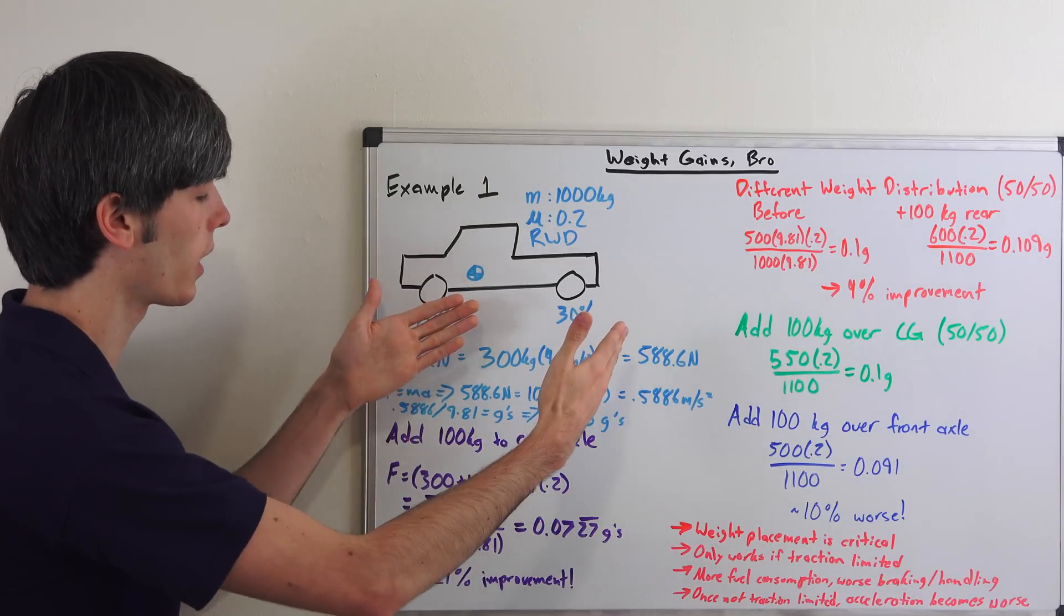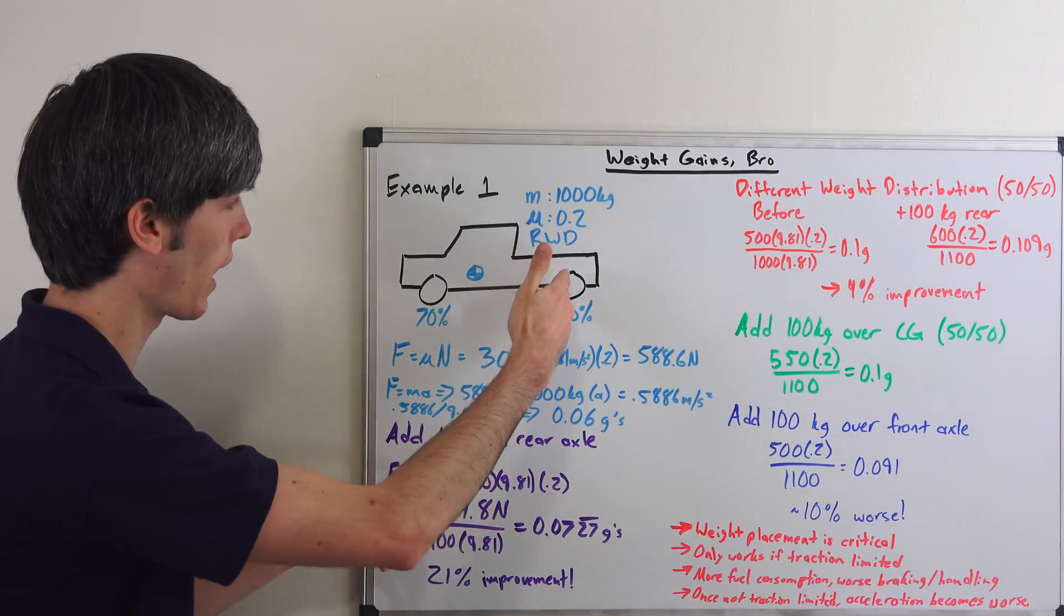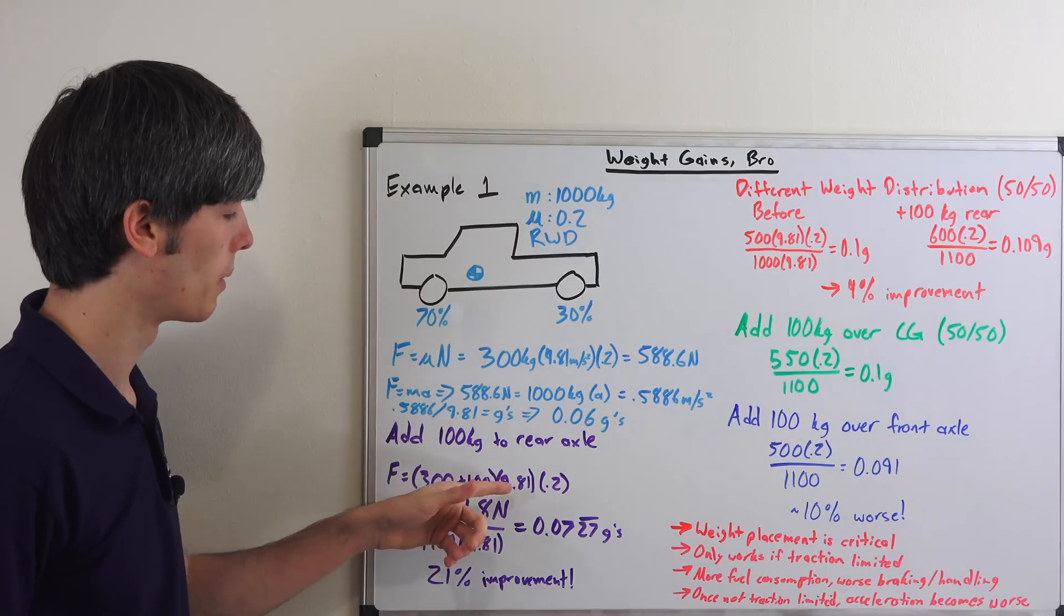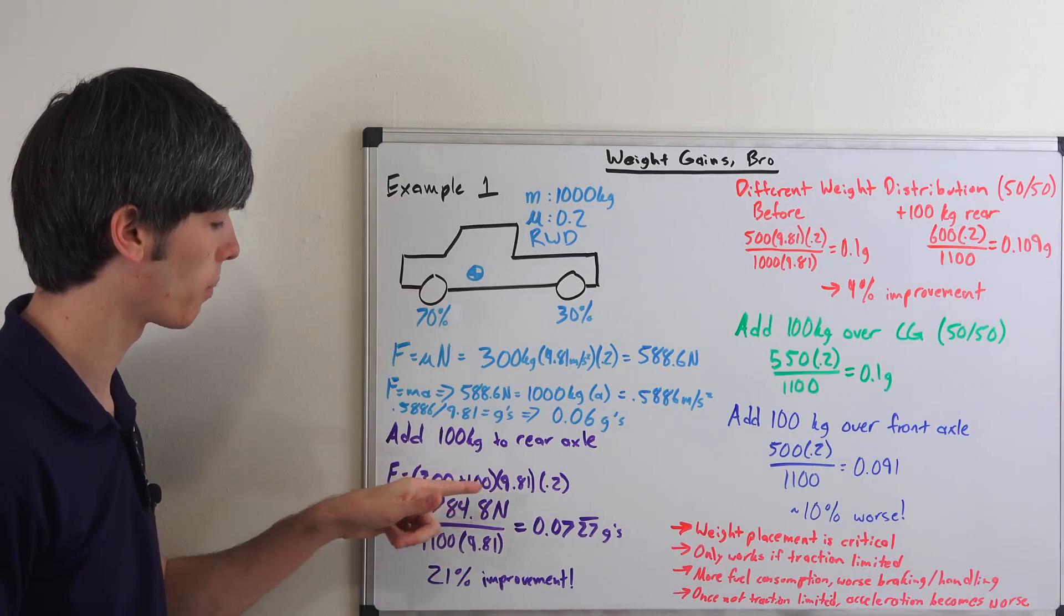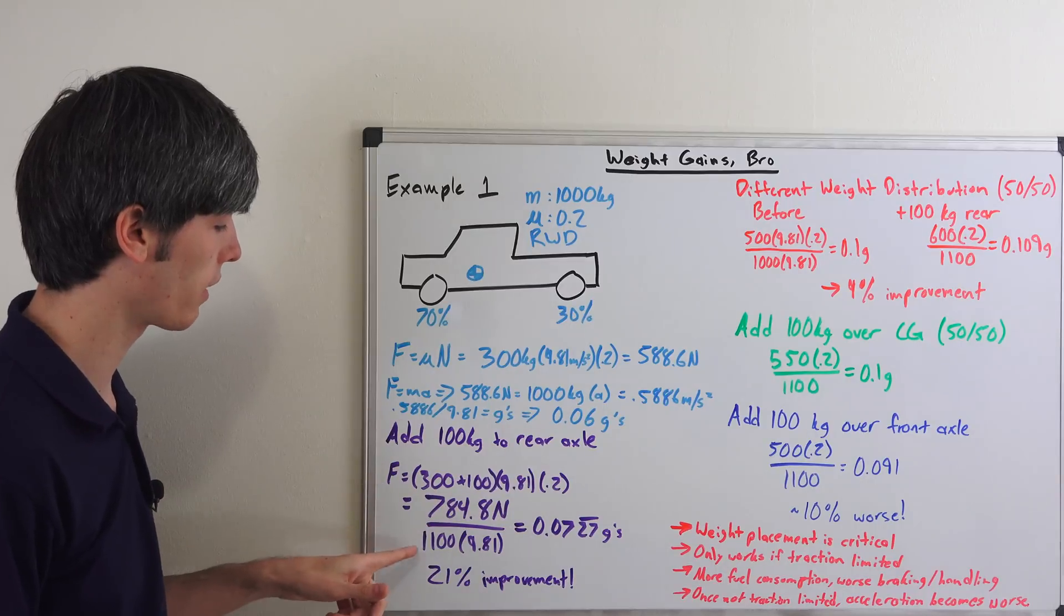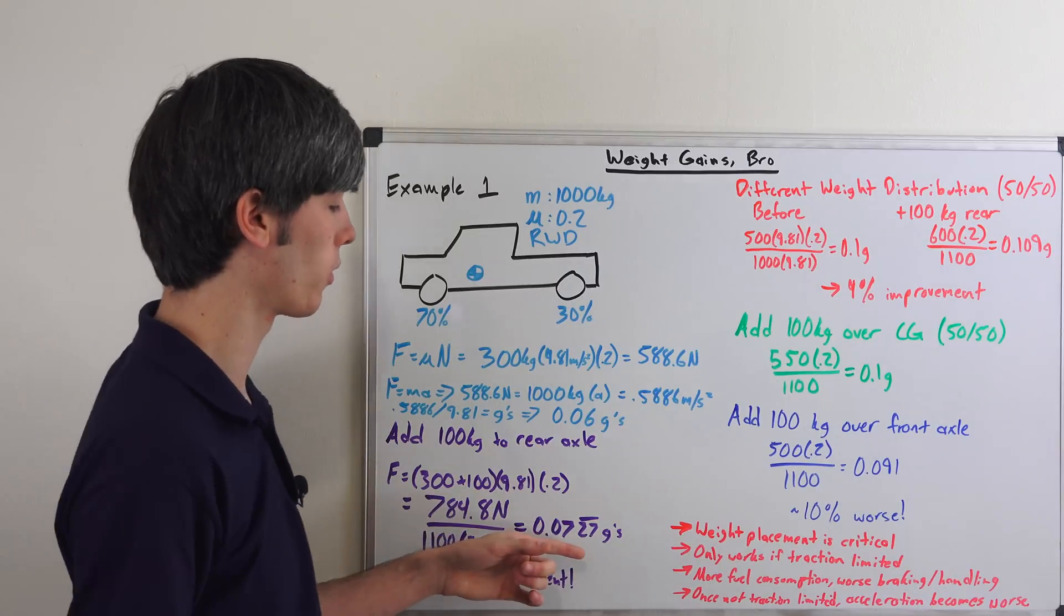So we're adding 100 kilograms to the rear. We've got 300 plus 100 kilograms, the weight that we added directly on top of the rear axle, multiplied by 9.81 times 0.2, that gives us 784.8 newtons. We divide that by 1100 times 9.81 and that gives us 0.0727 repeating g's.